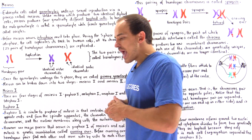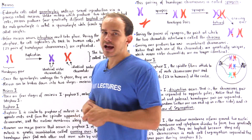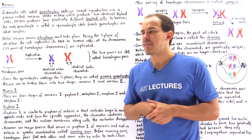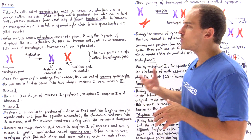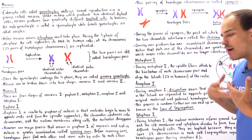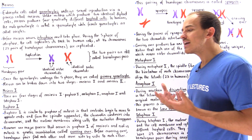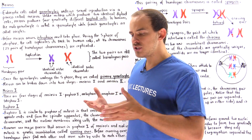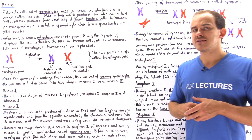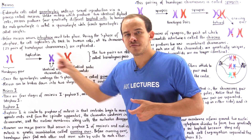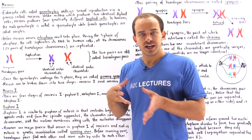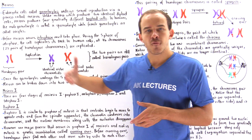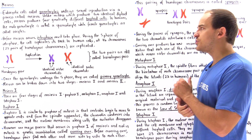In humans, our male gametocyte is known as a spermatocyte, while our female gametocyte is known as the oocyte. Before meiosis actually takes place, the cell undergoes a process known as interphase, which is similar to the interphase that takes place in somatic cells before they divide via mitosis.